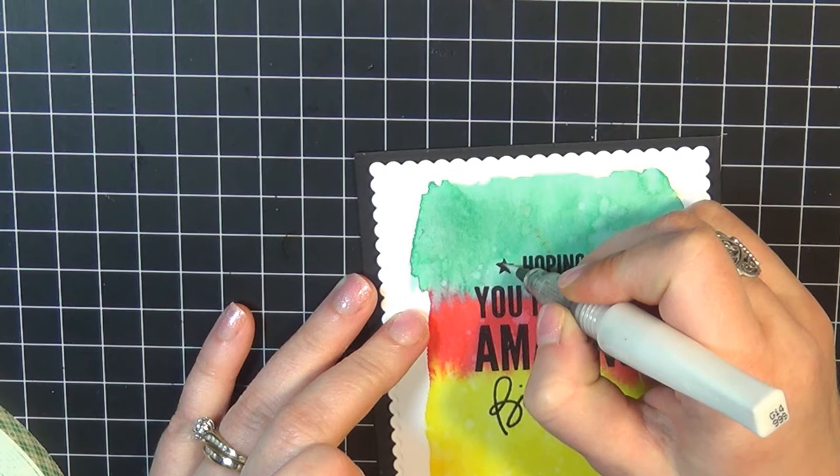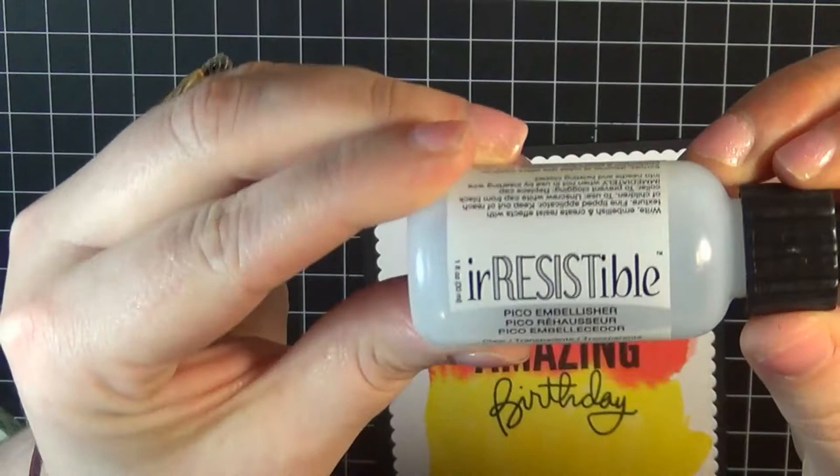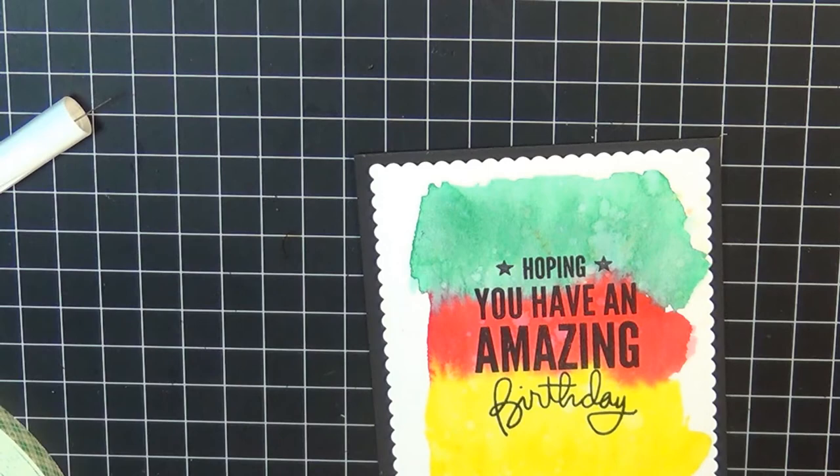I'm going to make sure that I was focused there for you guys. I'm going to add just a little bit of shimmer and then I'm going to go in with the Pico Embellisher. It's the clear—it's the Irresistible from Sakura Echo. This is one of my favorite products right now.